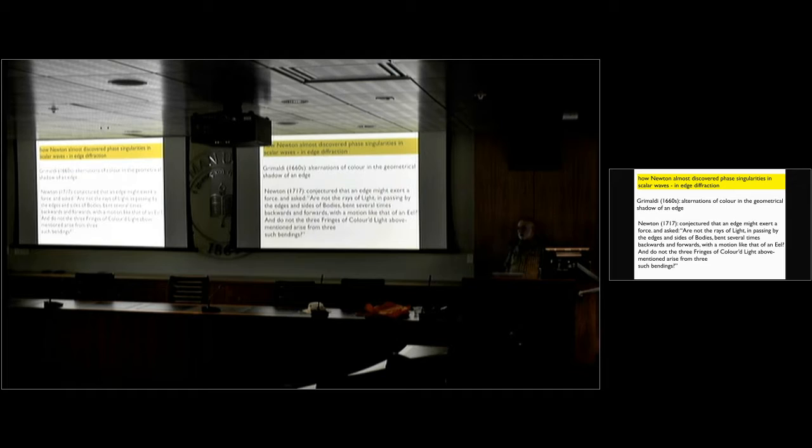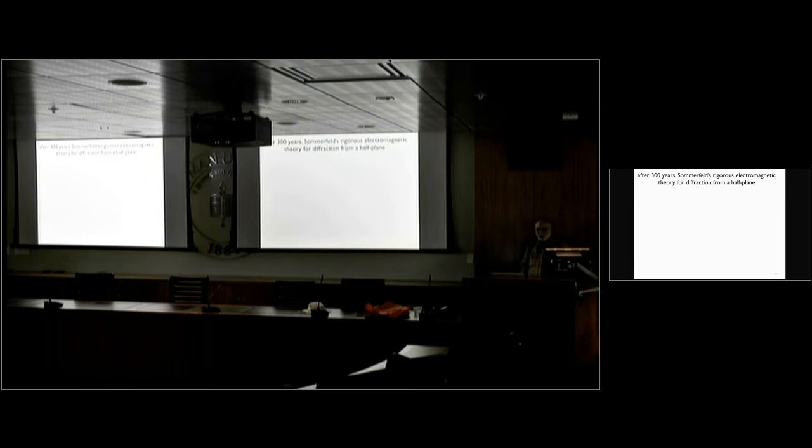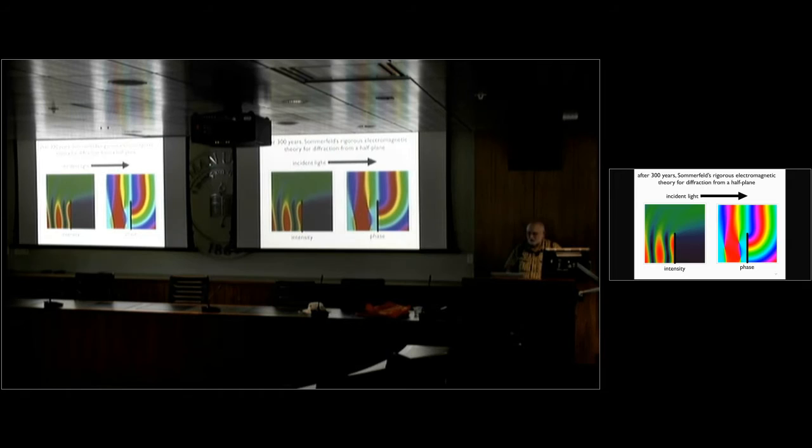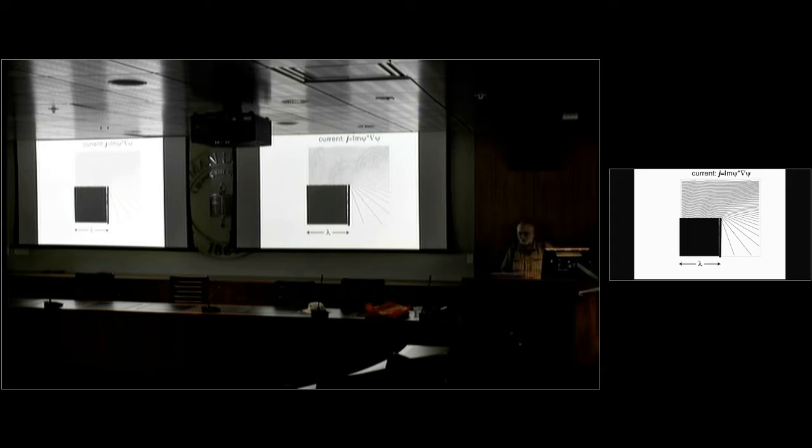This, he thought that the edges would exert forces on the waves. Are not the rays of light, in passing by the edges and sides of bodies, bent several times backwards and forwards, with a motion like that of an eel, he wrote? And do not the three fringes of coloured light, above mentioned, arise from three such bendings? Now, when I read that, it really gave me a shock, because he's right, and he's very cleverly right. After 300 years, we could see those eels. Now, what had to happen? First of all, you had to have Maxwell's electromagnetism. Then you had to have, in 1896, Zommerfeld's exact solution for diffraction of a wave by a half plane. And here's the intensity, and the incident light comes in, here's the half plane, and here's the phase. And you see these singularities here. There are three phase singularities. Here are the diffracted waves.